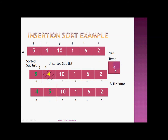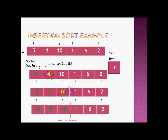Now pick the next item from the unsorted sublist and put it into temp. We check: is 5 greater than 10? No, it is not. So 10 is not going to change its place. We just shift the virtual partition forward, and this becomes our sorted sublist.